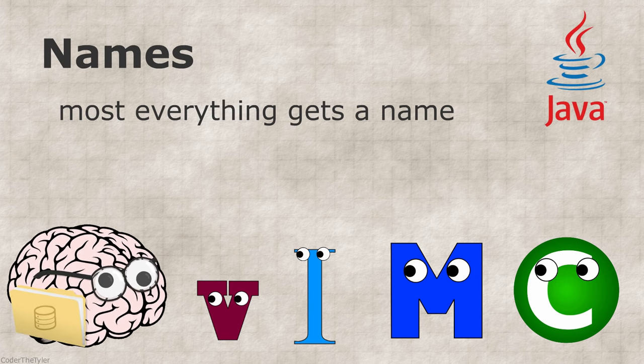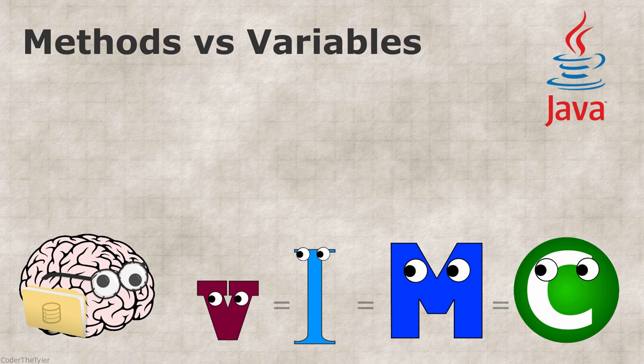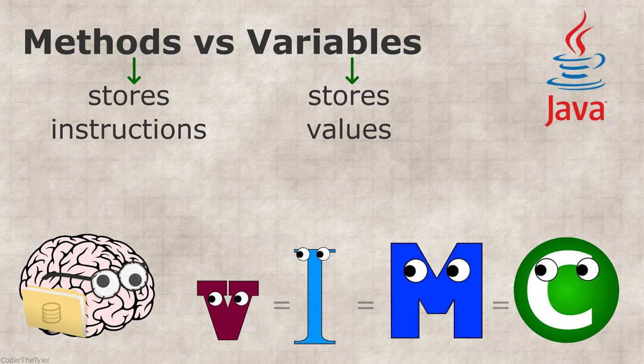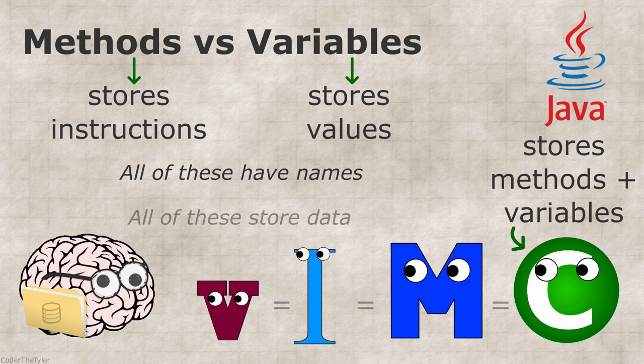And you may be tempted to think this makes all of these things vaguely similar. When you think about it, couldn't a method just be considered a variable, but instead of holding a value it just holds a list of instructions? This same analogy could be extended to classes and most everything else. All of those things have names and store data, so can't they just be considered the same thing?